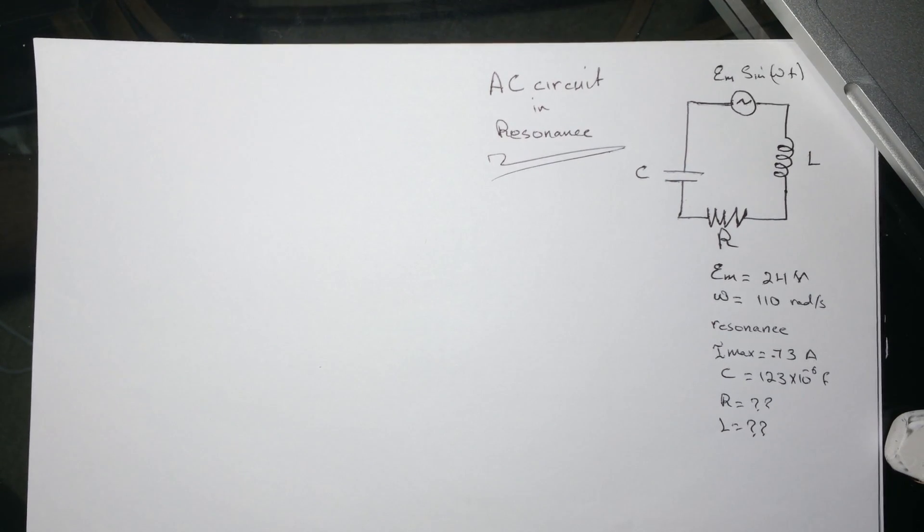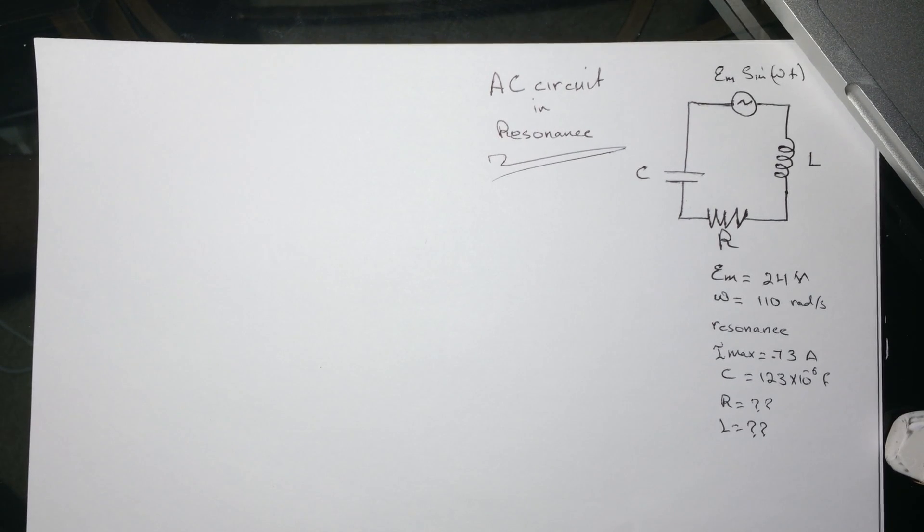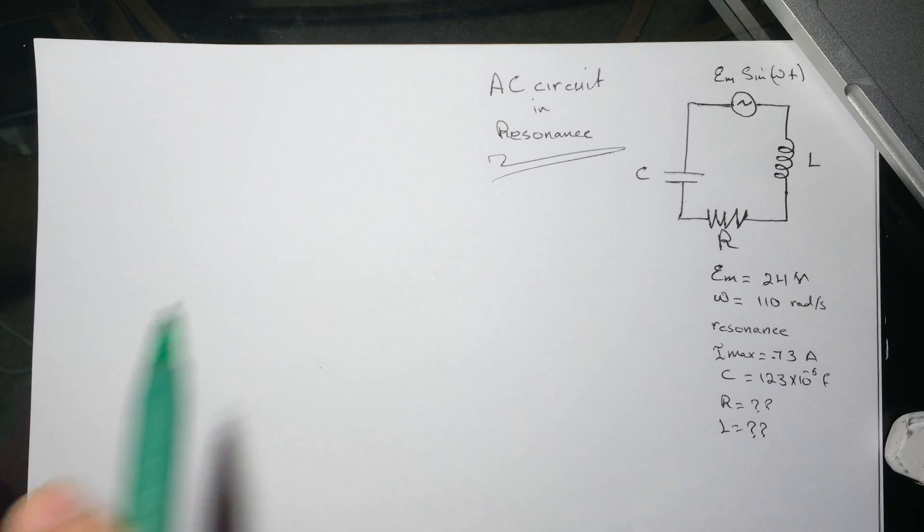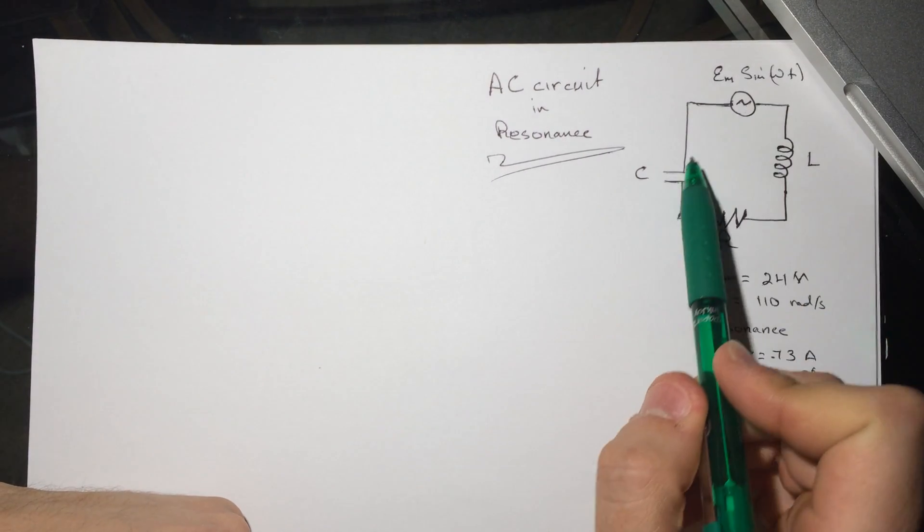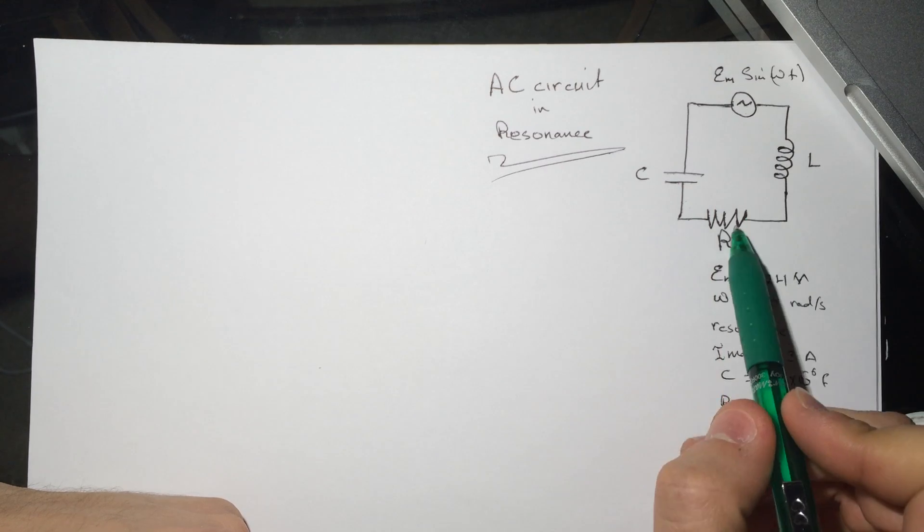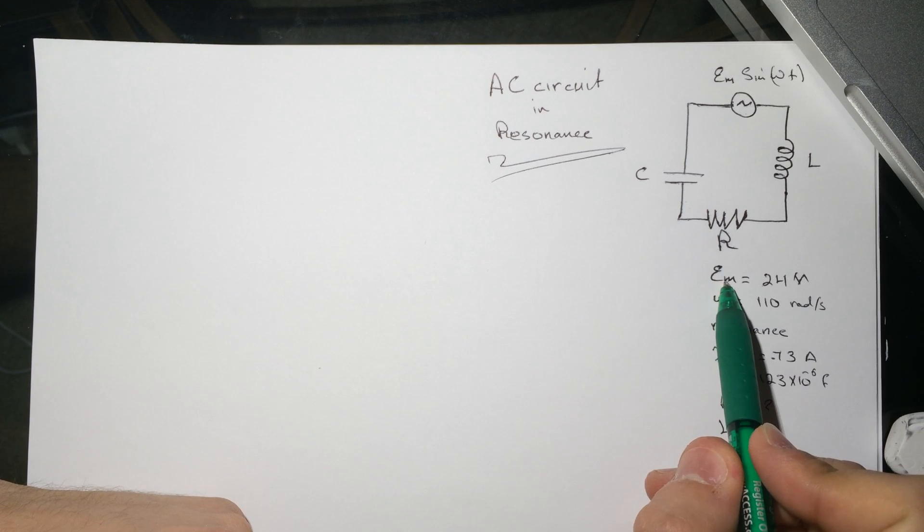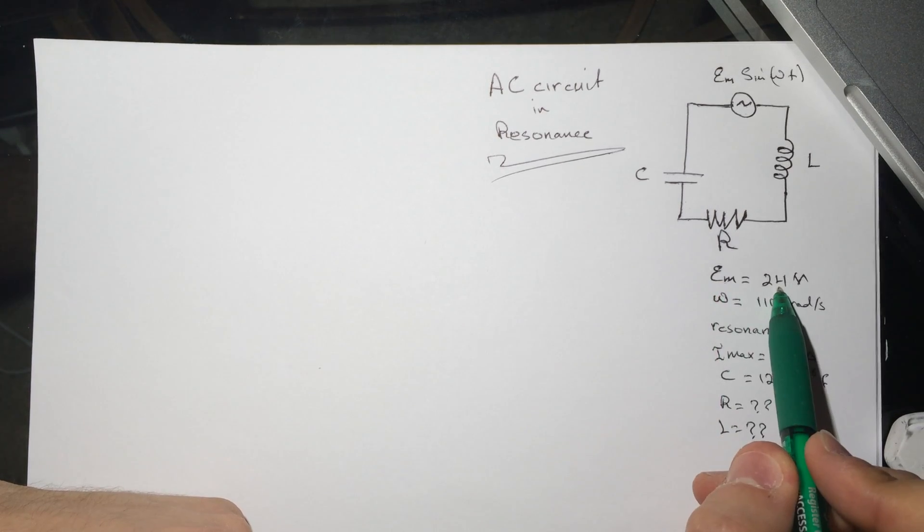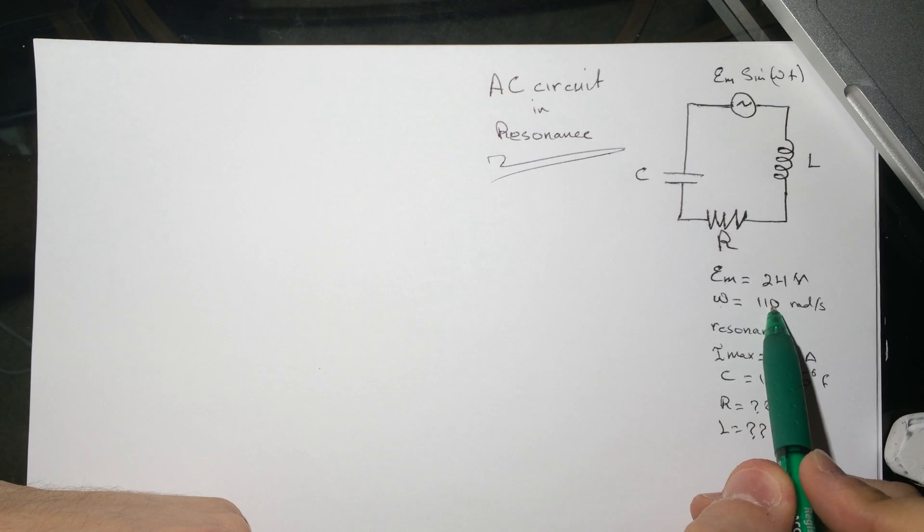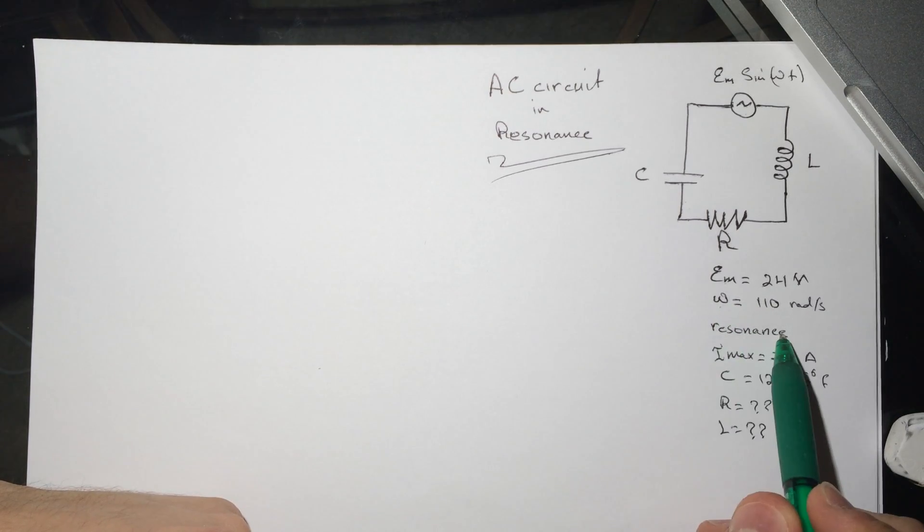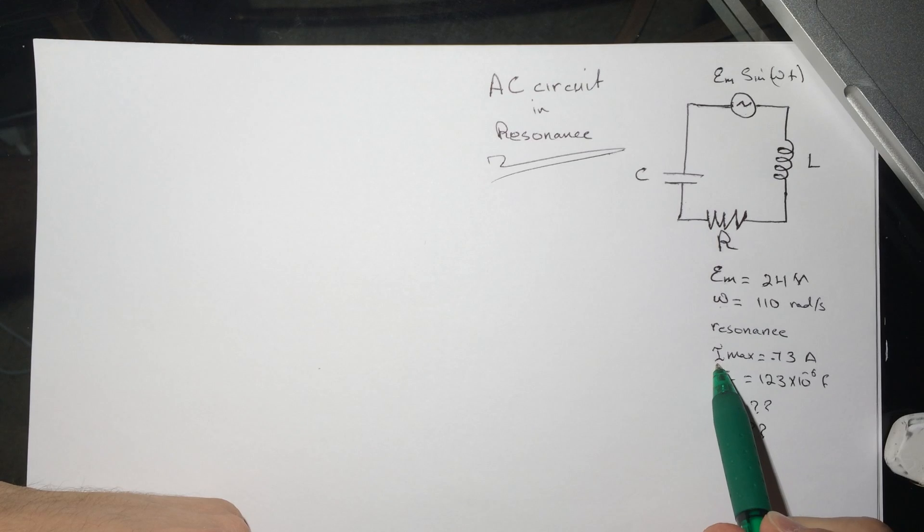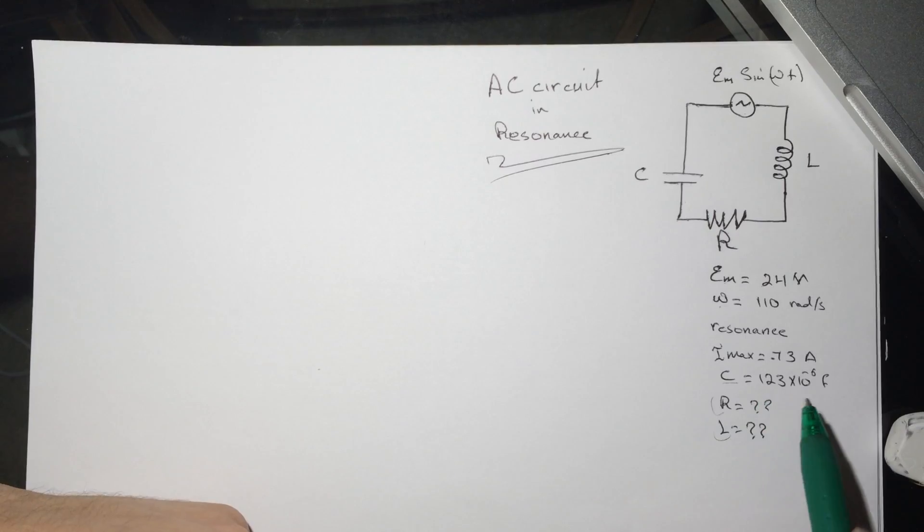Hi guys, this is another smart physics tutorial. This problem is on AC circuit and resonance. Here's our circuit: generator, capacitor, resistor, and inductor. They gave us the voltage for the generator Vmax is 24 volts, omega is 110 rad/s, and it's in resonance. We have Imax and capacitance, but we don't have R or L.